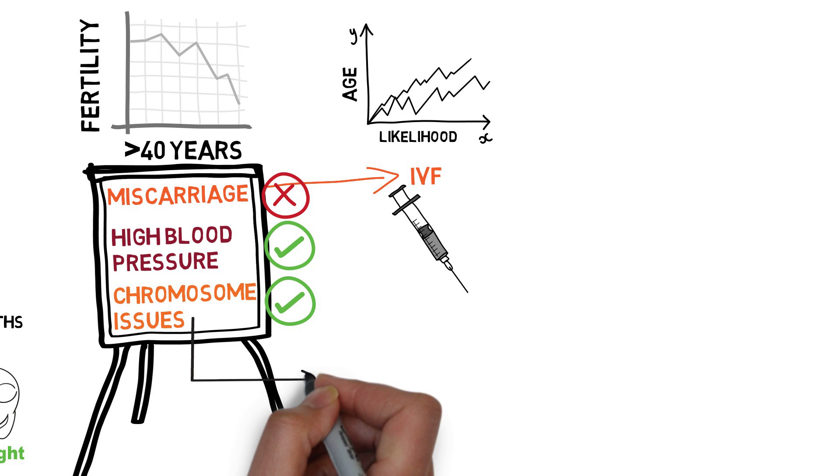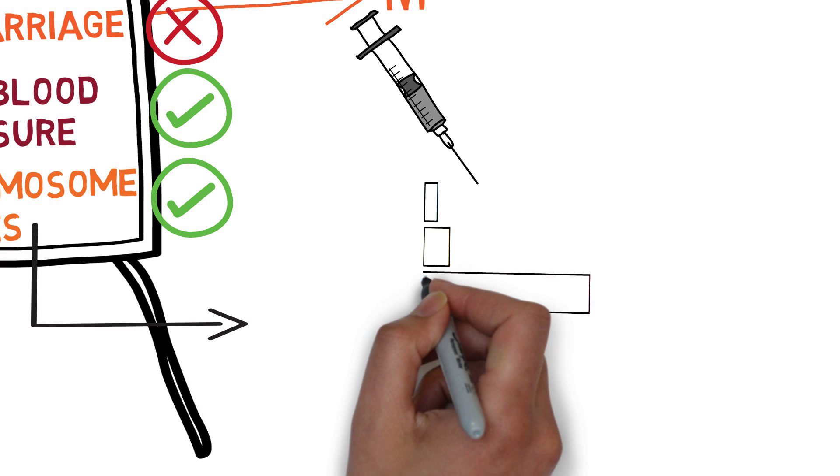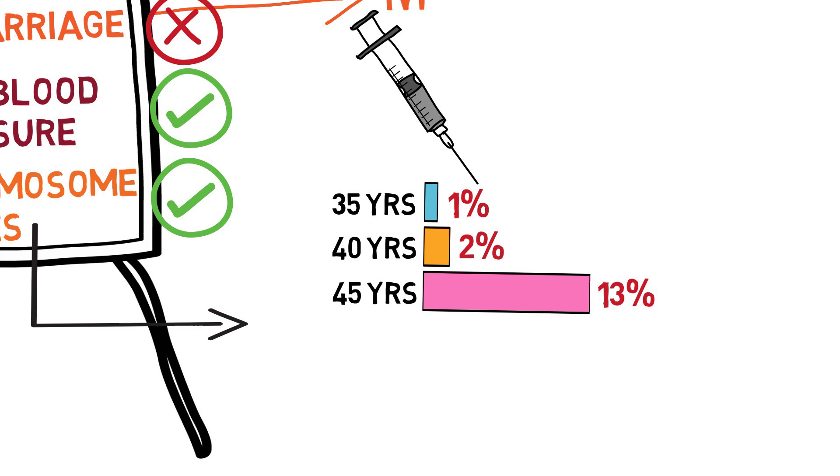For just generic genetic issues, the rate is about 1% for women 35, 2% for women who are 40, and 13% for women who are 45.